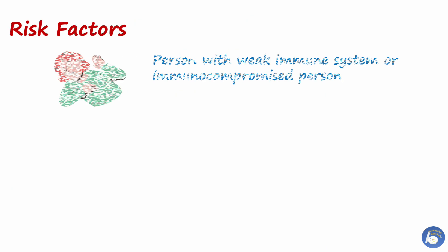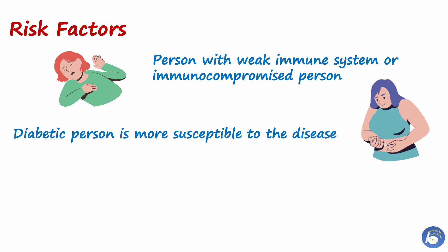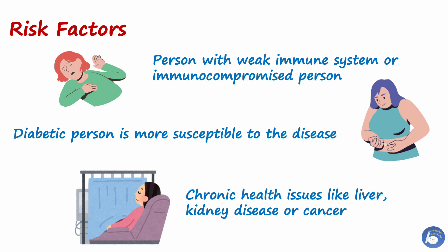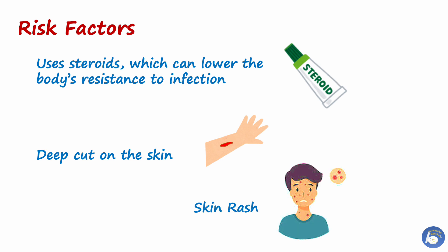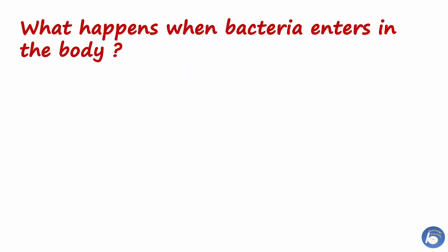Some people are more susceptible to infection: persons with a weak immune system, diabetic persons, persons with chronic health problems such as cancer, liver or kidney disease, persons who use steroid medicines which can lower the body's resistance to infection, those who have cuts in the skin including surgical wounds, and persons who recently had chickenpox or other viral infections that cause a rash.